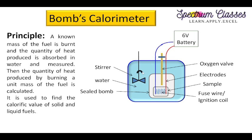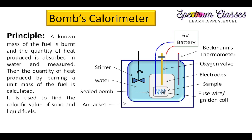Since the water near the steel bomb heats more than the rest, we need a mechanical stirrer to homogenize it. To measure the temperature rise of the water, we use a Beckmann thermometer, which can accurately measure temperature differences as small as 0.1 degrees centigrade. There is also an air jacket outside to insulate the system. This completes the construction of the bomb calorimeter.